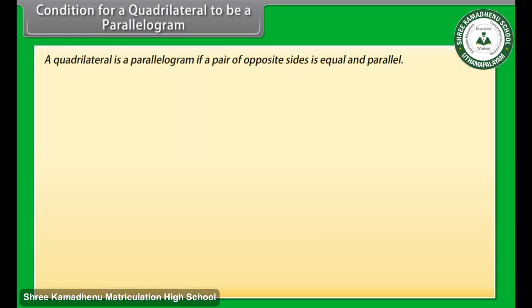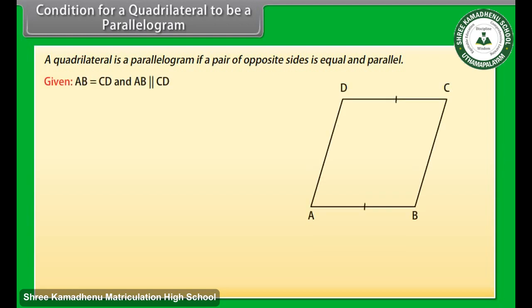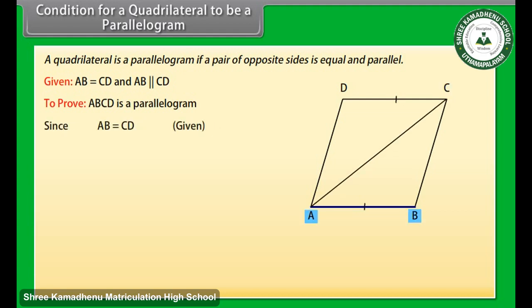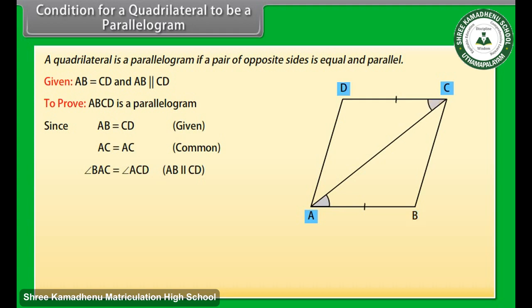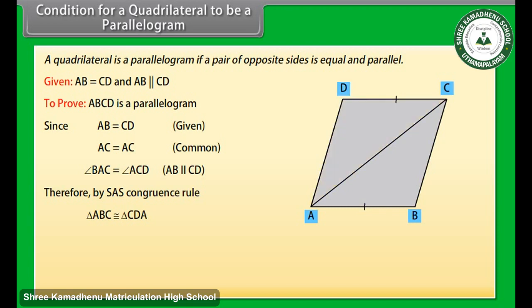Condition for a quadrilateral to be a parallelogram. Another condition for a quadrilateral to be a parallelogram is: a quadrilateral is a parallelogram if a pair of opposite sides is equal and parallel. Given that AB is equal to CD and AB is parallel to CD. We have to prove that ABCD is a parallelogram. Draw a diagonal AC. Since AB is equal to CD — given — and AC is equal to AC — common — and angle BAC is equal to angle ACD because AB is parallel to CD. Therefore by SAS congruence rule, triangle ABC is congruent to triangle CDA.